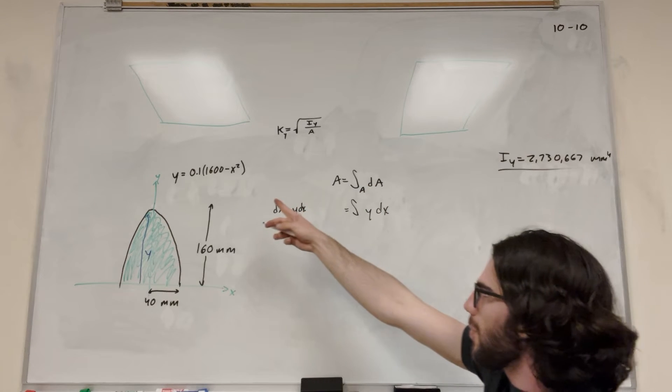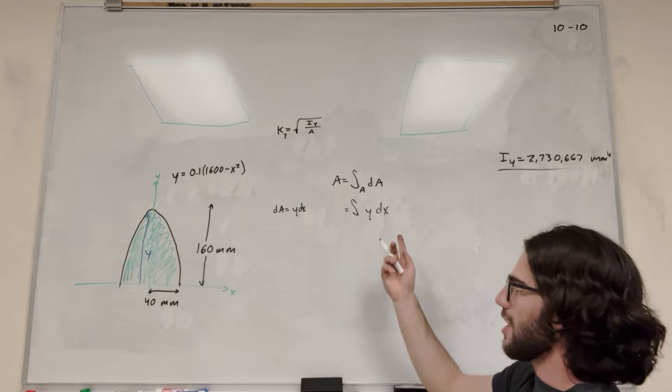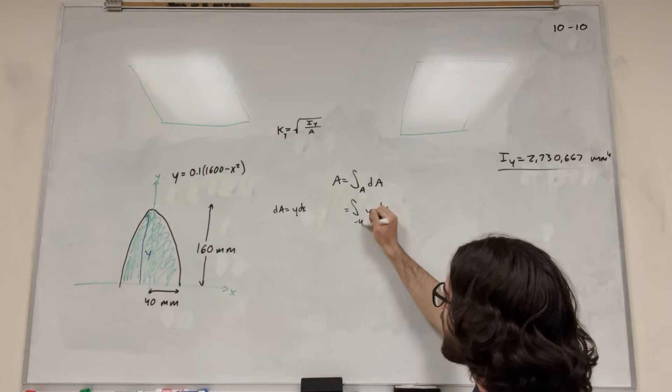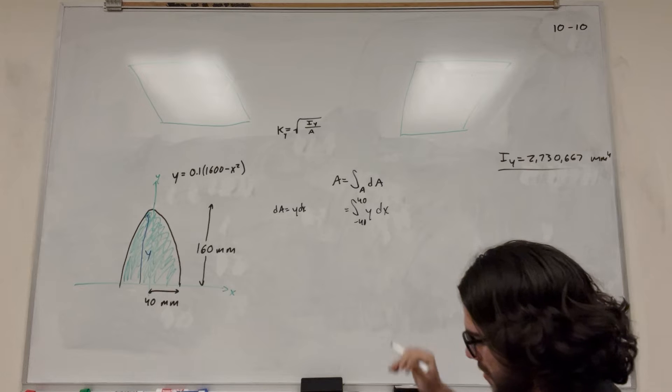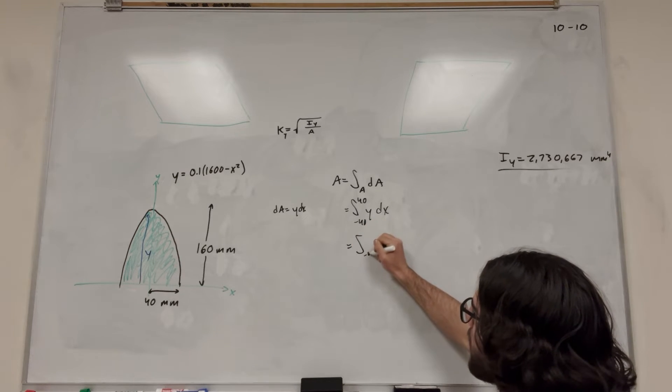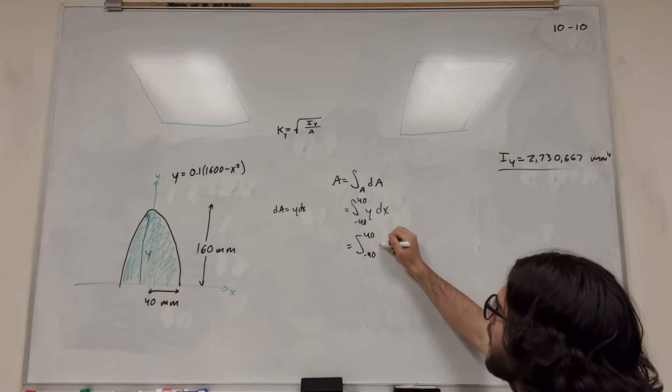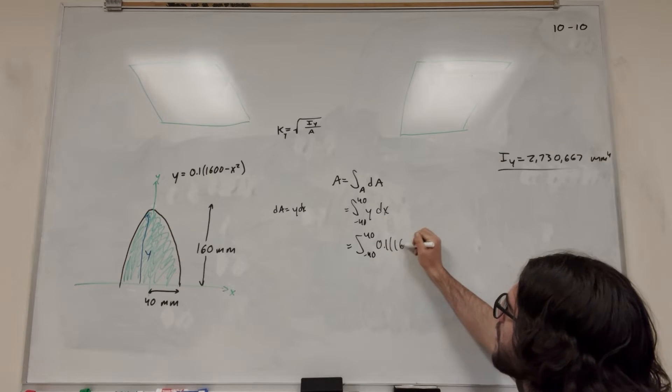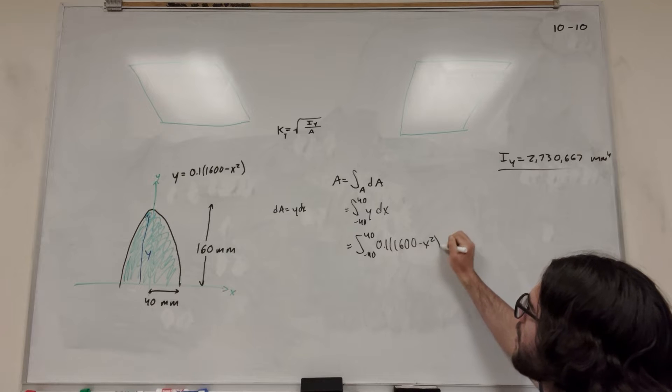And we've kind of done this already. We said that y is equal to this. We know that this is going to work out, and we know what our x bounds are. Negative 40 to 40. So then we're just going to plug what we know for y. Negative 40 to 40. y is 0.1 times 1,600, minus x squared dx.